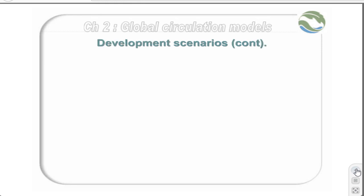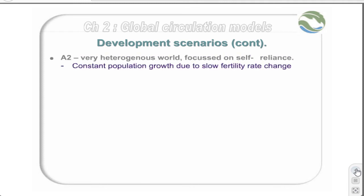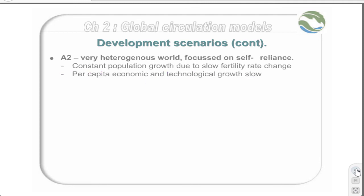The A2 scenario involves a very heterogeneous world, focused primarily on self-reliance. In this scenario, population growth is constant, due to a slow change in the fertility rates. Furthermore, per capita economic and technological growth is also slow, and responses are primarily directed in a regional arena.